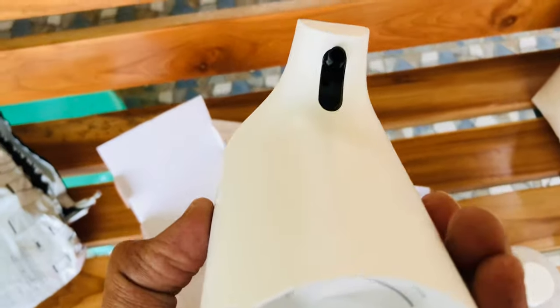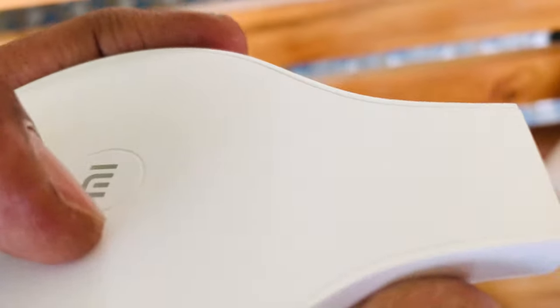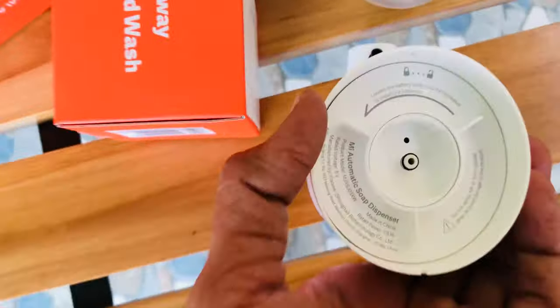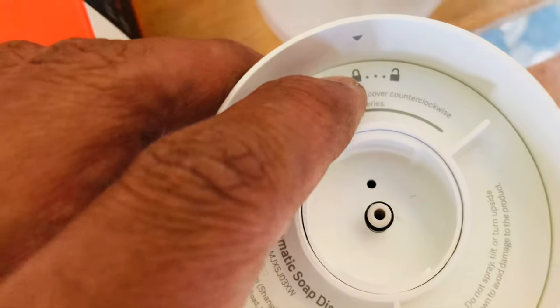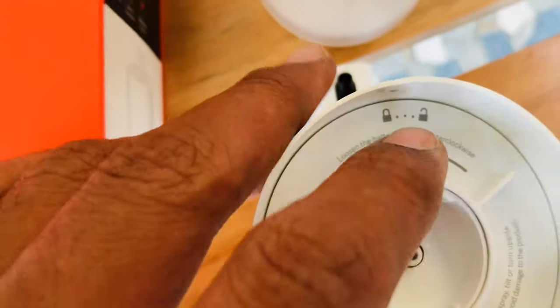This is the machine. If you see, this is the dispenser output layer, this is the power button and on-off button. This is the area where we install the batteries. Here they've given the indication level to lock and unlock - you have to rotate in this direction to unlock, then install the batteries.